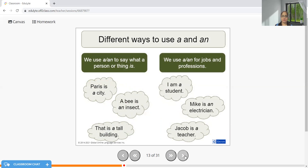There can be different ways to use 'a' and 'an'. Paris is a city. Paris is a beautiful city - both are correct. A bee is an insect. That is a tall building. I am a student. Mike is an electrician - please note here 'electrician', that is the profession of Mike, but E is a vowel, so we need to use 'an' before that. So I'm just saying Mike is one electrician in that sense. In all the sentences we are depicting about something which is one in quantity.